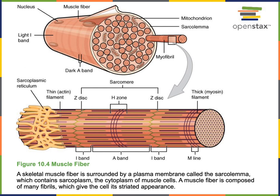The ends of the sarcomeres are known as the Z lines, which contain proteins that anchor the thin filaments in place. The H band is a central region within the sarcomere that contains thick filaments with no overlapping thin filaments. The M line is the center of the H band within the A band. The A band is the entire length of the thick myofilaments, with some overlapping thin myofilaments, while the I band includes the Z discs and the regions of the thin myofilaments that have no overlapping thick myofilaments.